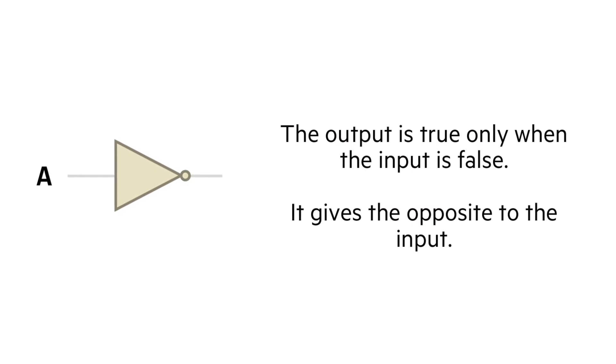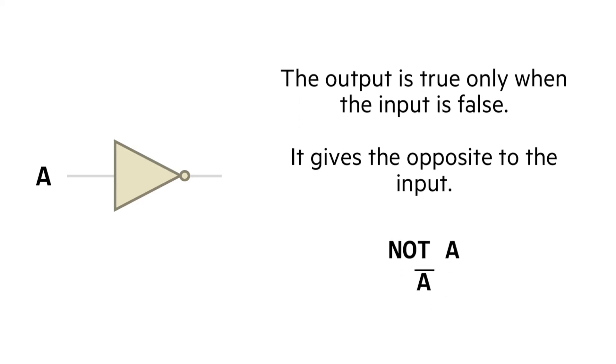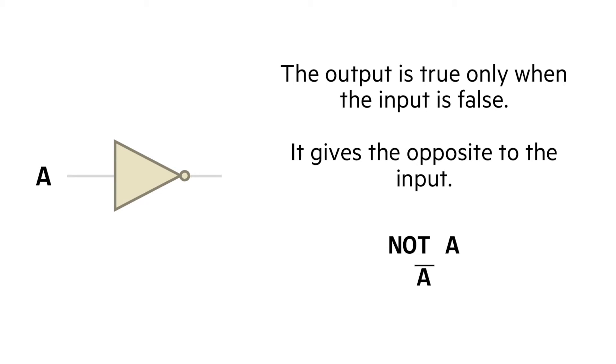What's it all about then? Well, a NOT gate will give us the opposite of the input. If A is false, then we get a true value, and vice versa. It can be written in standard notation as either NOT A, or an A with a little bar over the top of it. There are actually many more ways of writing this, but those are the ones we need to know about for our exam.